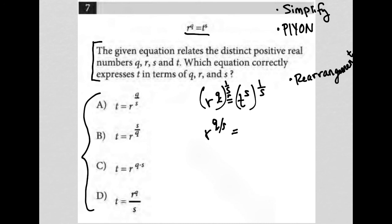Equals, well, the whole reason why I raised it to the 1 over s power was so that the s's could cross out. So that just leaves me t by itself. And that's the answer. T is equal to r to the q over s power, and that is answer choice A.